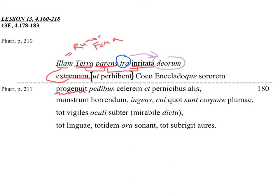And then in apposition, sororem, the sister, that's accusative, to Coeus and Enceladus. Those are datives, sister to them. To Coeus and Enceladus.